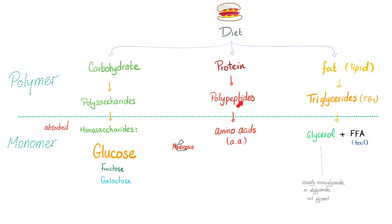Proteins become polypeptides, then oligopeptides, then dipeptides, and then amino acids. How about a monopeptide? Well, there is no such thing. A monopeptide is one amino acid. Fats or lipids — triglycerides — these are the big ones, and then glycerol and fatty acid, these are the small ones.